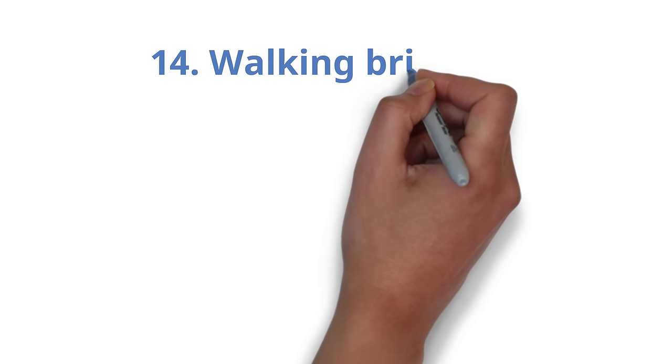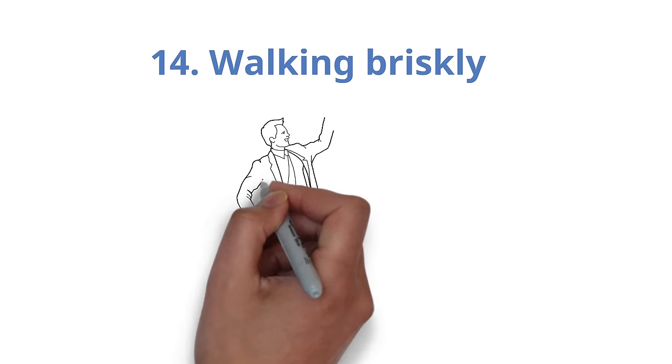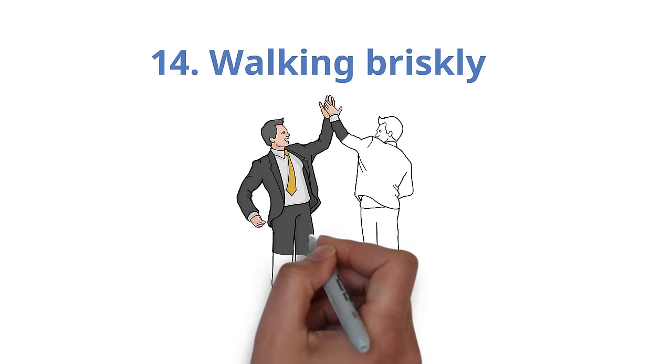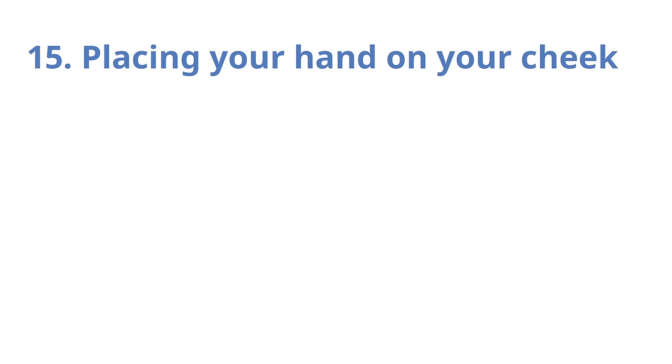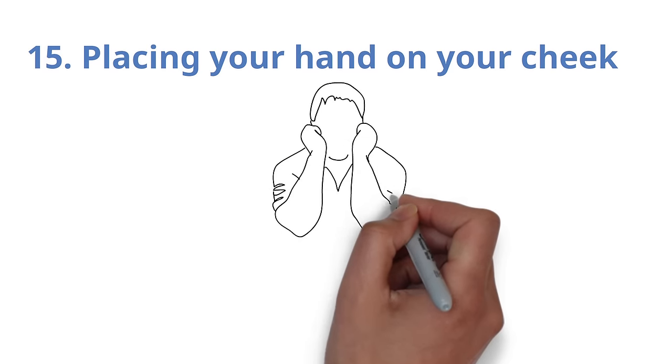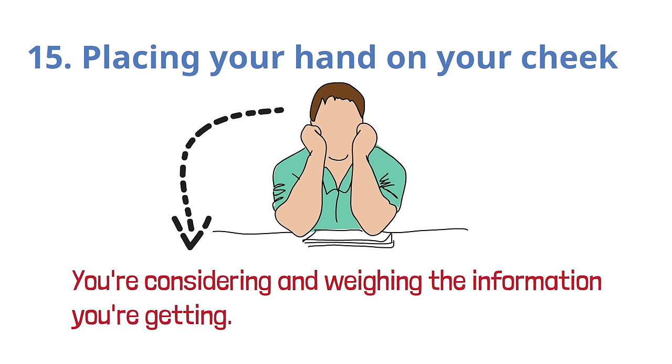Number 14. Walking briskly. When you want to exude self-assurance, move quickly and purposefully. Number 15. Placing your hand on your cheek. When you place your palm on your cheek, you're indicating that you're considering and weighing the information you're getting.